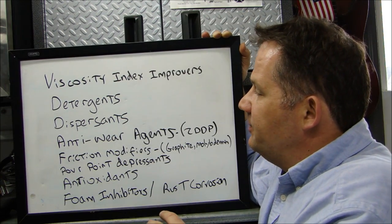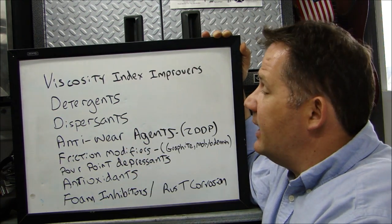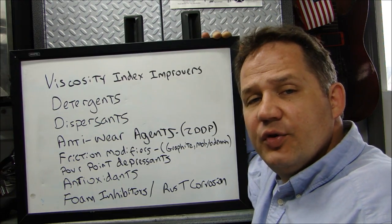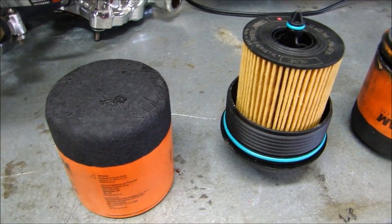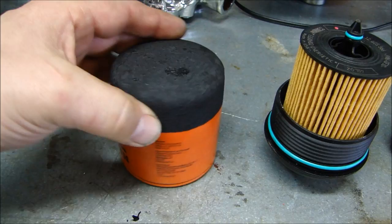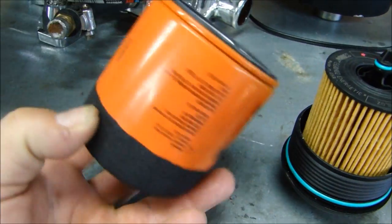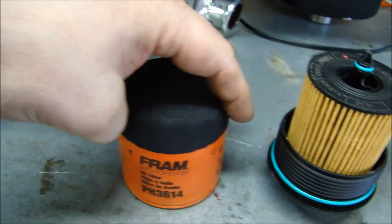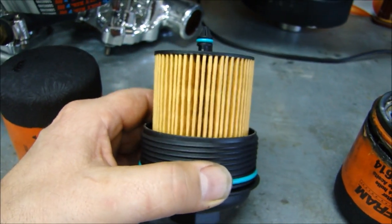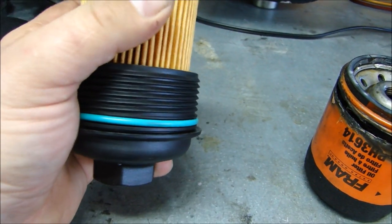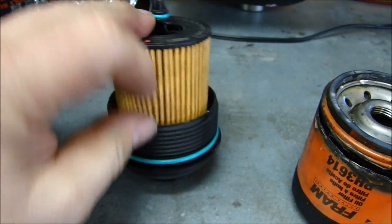Those are the basic additives that can be put in oil or are already in oil. The oil you buy may have some or all of them depending on what you purchase. Now let's talk about oil filters. There are two basic kinds: the standard canister type — like this Fram Tough Guard — and the insert or cartridge filter that comes in many new vehicles. With the cartridge type, you don't replace the whole housing — only the cartridge insert itself.